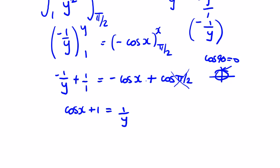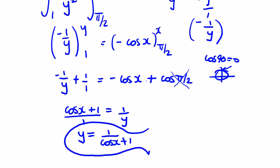So either cross multiplying by y and dividing by cos x plus 1, or identifying them as fractions that we can invert, we get y is equal to 1 over cos x plus 1. That's this equation solved.